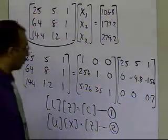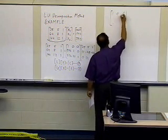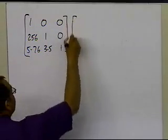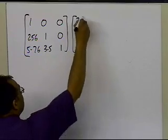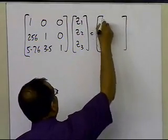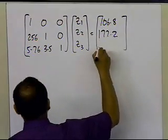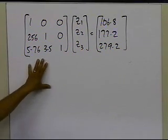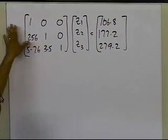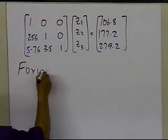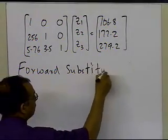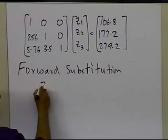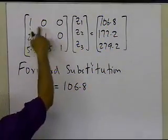Let's go ahead and take these steps. The lower triangular matrix times Z equals C gives us: 1, 0, 0; 2.56, 1, 0; 5.76, 3.5, 1 times [Z1, Z2, Z3] equals [106.8, 177.2, 279.2]. We use forward substitution starting from the first equation: Z1 equals 106.8, since it's simply 1 times Z1 equals 106.8.